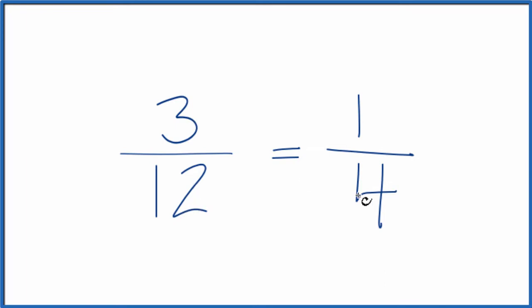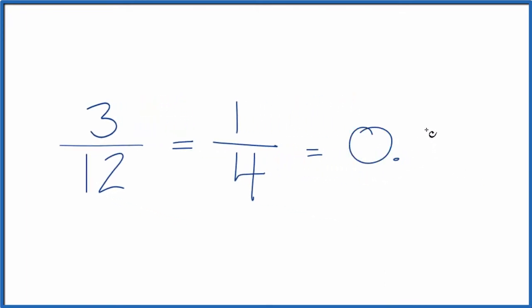And if you divide 3 by 12, or 1 by 4, you get the same answer, 0.25, because they're equivalent fractions.